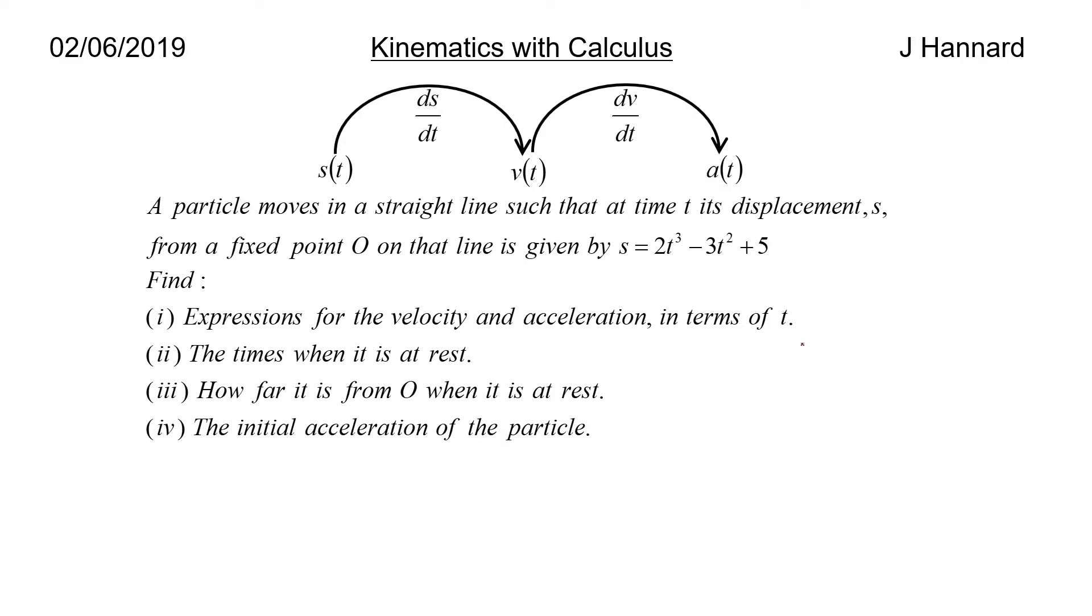A particle moves in a straight line such that at time t, its displacement s from a fixed position O on the line is given by s = 2t³ - 3t² + 5t. First, find expressions for the velocity and acceleration in terms of t. We know that v is ds/dt, so we're going to have to differentiate this function s with respect to t.